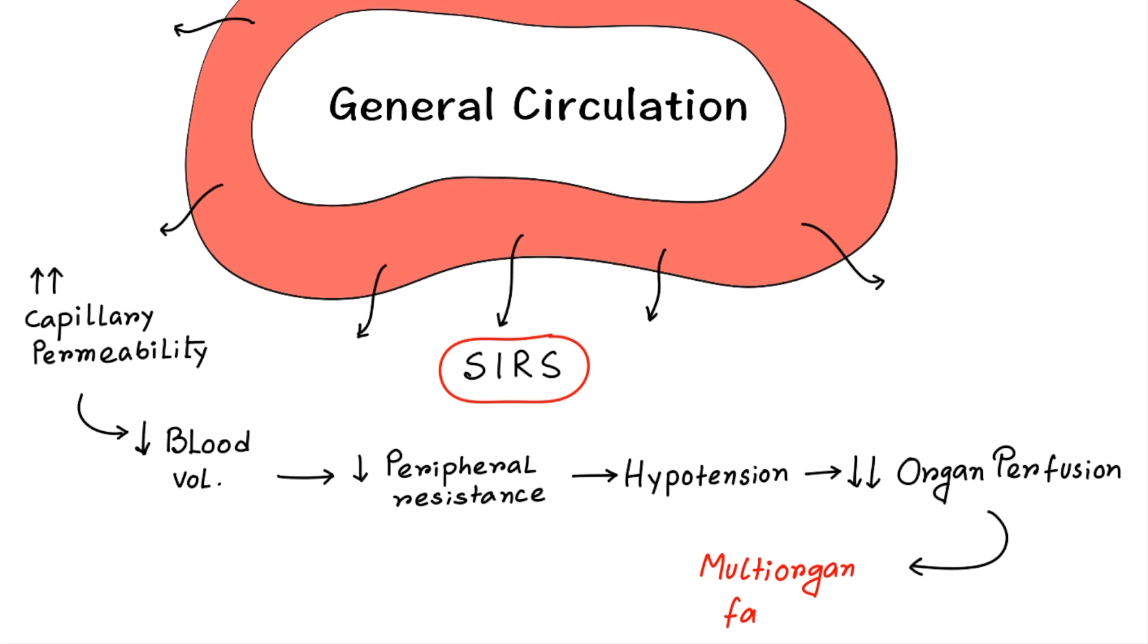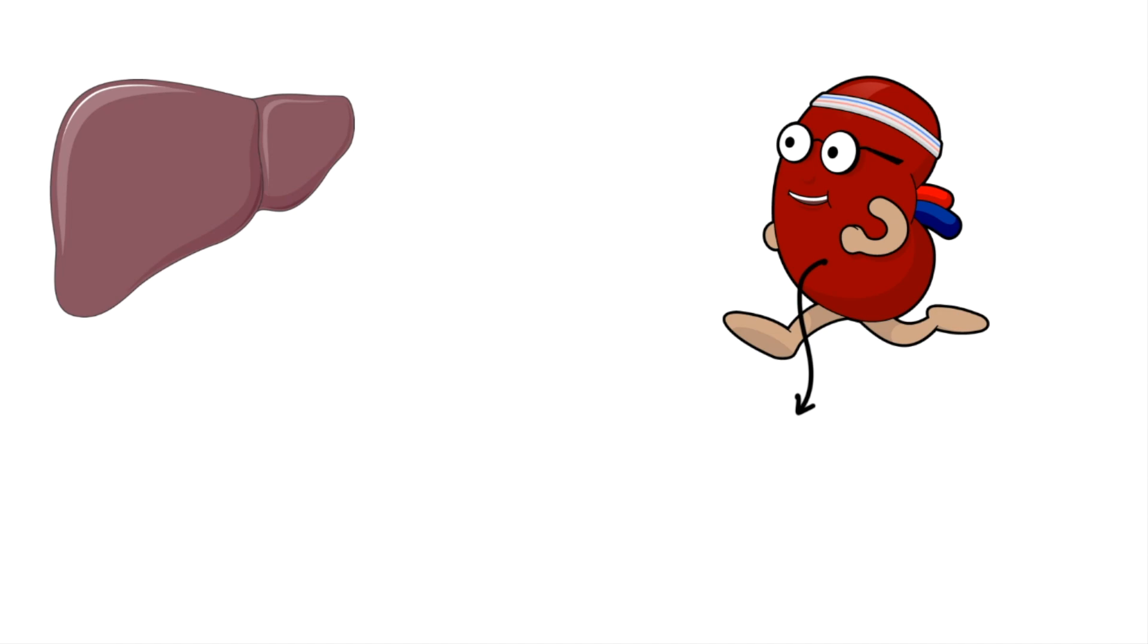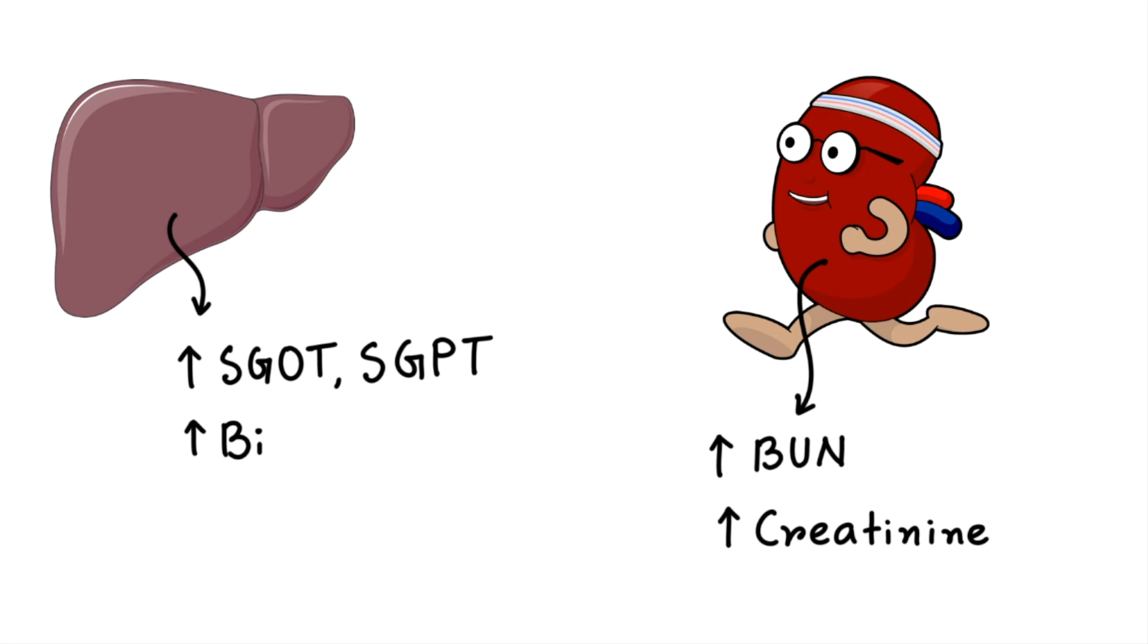If you see the kidney, the function will be altered due to decreased blood flow. Blood urea nitrogen and creatinine will be elevated in this situation. In liver function test, you can see there is elevated SGOT, SGPT, bilirubin and acute phase reactant proteins like C-reactive protein, interleukin-6 and fibrinogen.